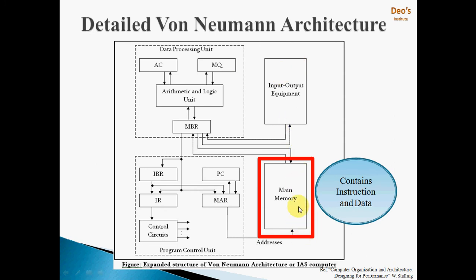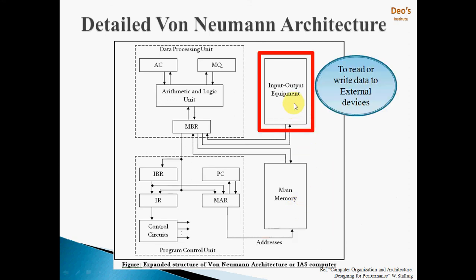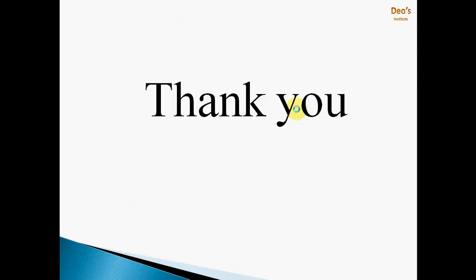The next block is the main memory, which we have seen earlier — it contains instructions and data. The input/output equipments are responsible for reading data from external devices or writing data to external devices. This is all about the detailed von Neumann architecture. Thank you very much for watching. If you like the video, please press the like button; if you have any doubts, ask through the comment section; and don't forget to subscribe and click the bell icon for latest updates.